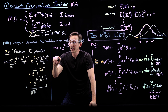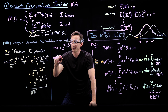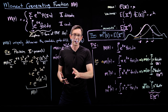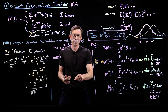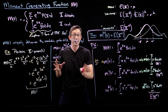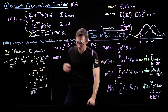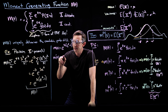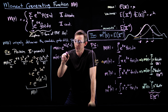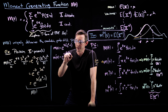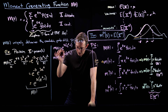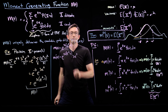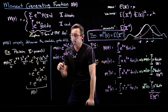So m prime of t — if I take the derivative of this with respect to t, you should pause and use the chain rule to remind yourself this is true, but it's a pretty easy fact — this is e to the lambda e to the t minus one, times lambda e to the t. That's just the first derivative of this function.